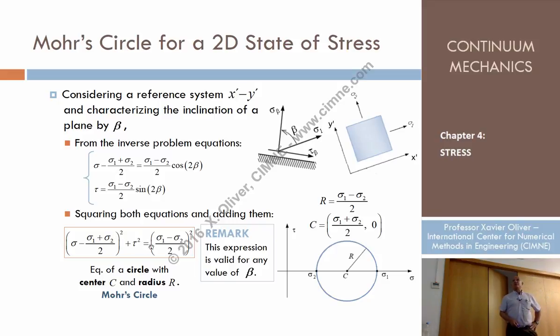But now this equation says that no, there are not any, because all them have to fulfill this equation. And this equation is again the equation of a circle, where the center is sigma 1 plus sigma 2 divided by 2, and the radius is sigma 1 minus sigma 2 divided by 2.